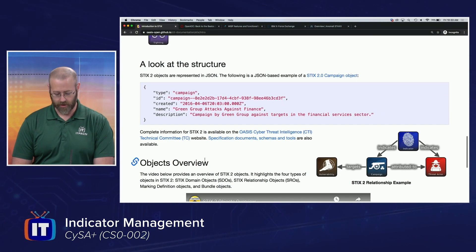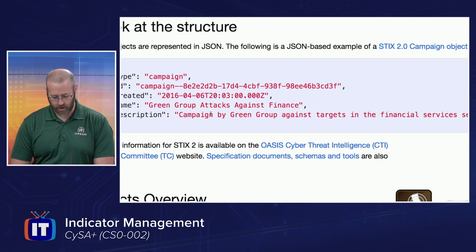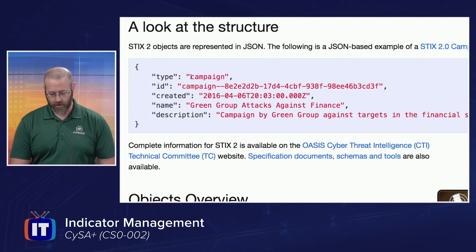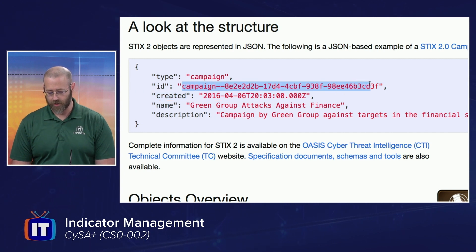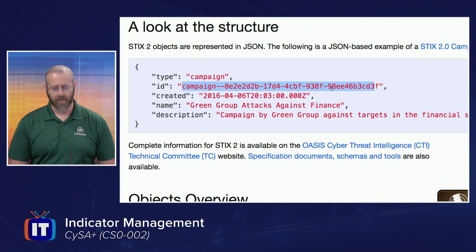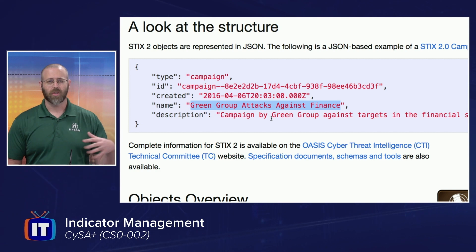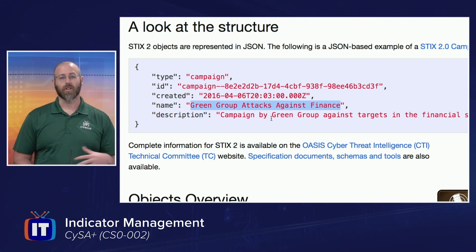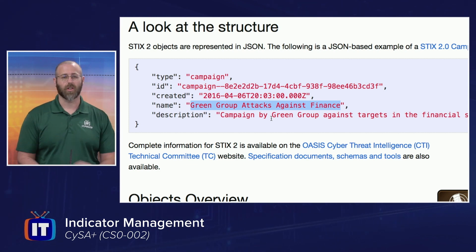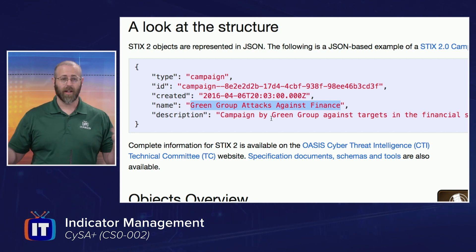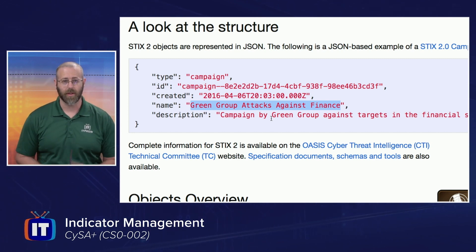Here is the structure of STIX - a little JSON action. You can see the type - this is a campaign. The ID looks like a UUID. Here we have when it was created, the name - this is Green Group's attack against finance - and then the description for it. Just a really simplistic version of some STIX information that could then be uploaded to a TAXII server and grabbed. We can exchange this information.